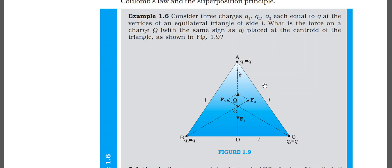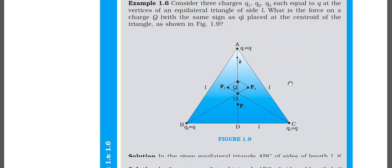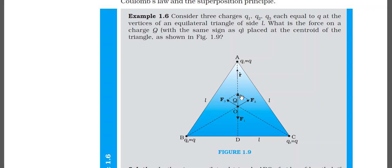In the equilateral triangle ABC, charges Q1, Q2, Q3 (each of magnitude Q) are placed at the three vertices A, B, and C respectively. A fourth charge, capital Q, of the same sign, is placed at the centroid O. All charges are equal in magnitude and sign — either all positive or all negative. The question is: what is the net force on the charge capital Q at the centroid?